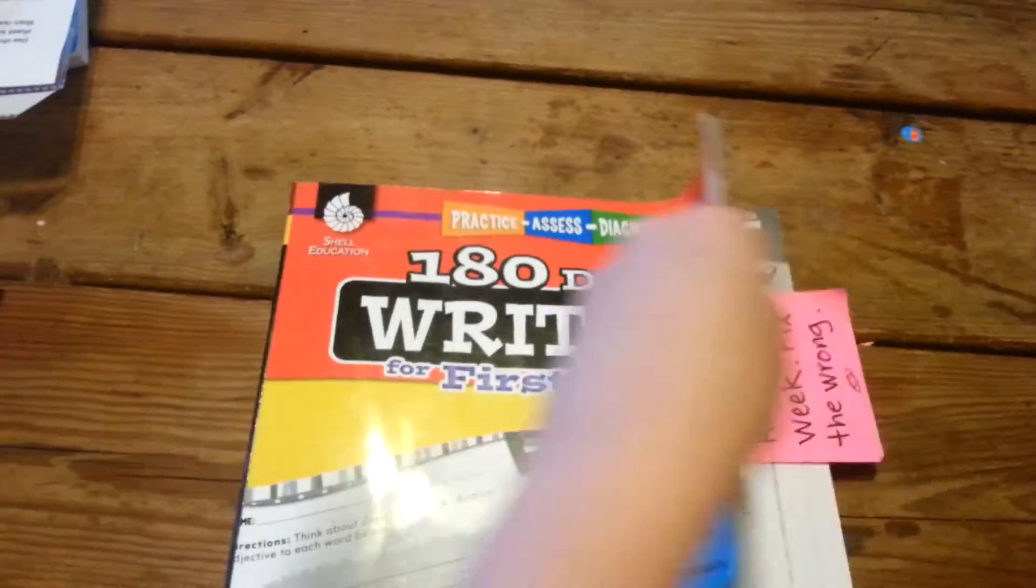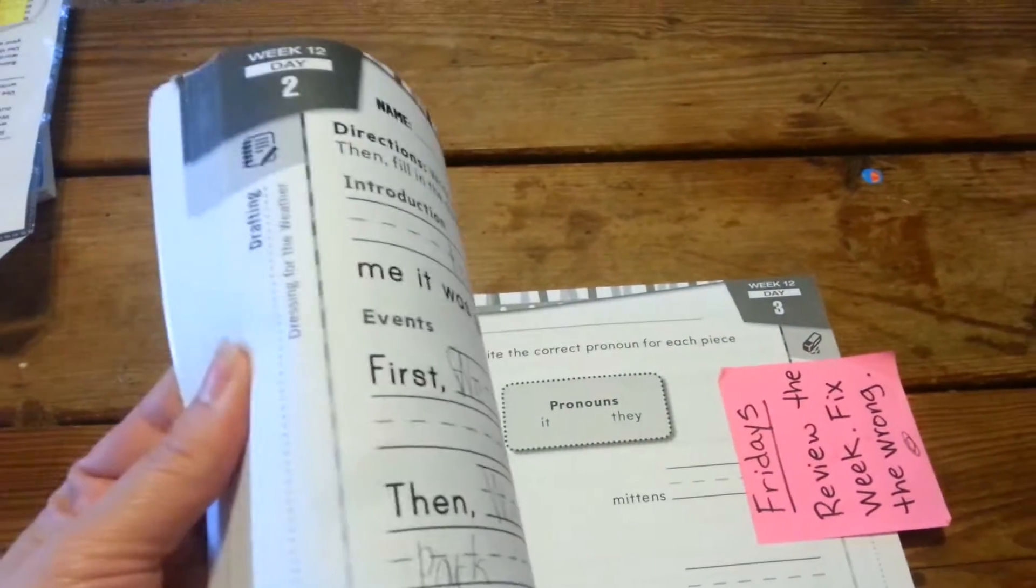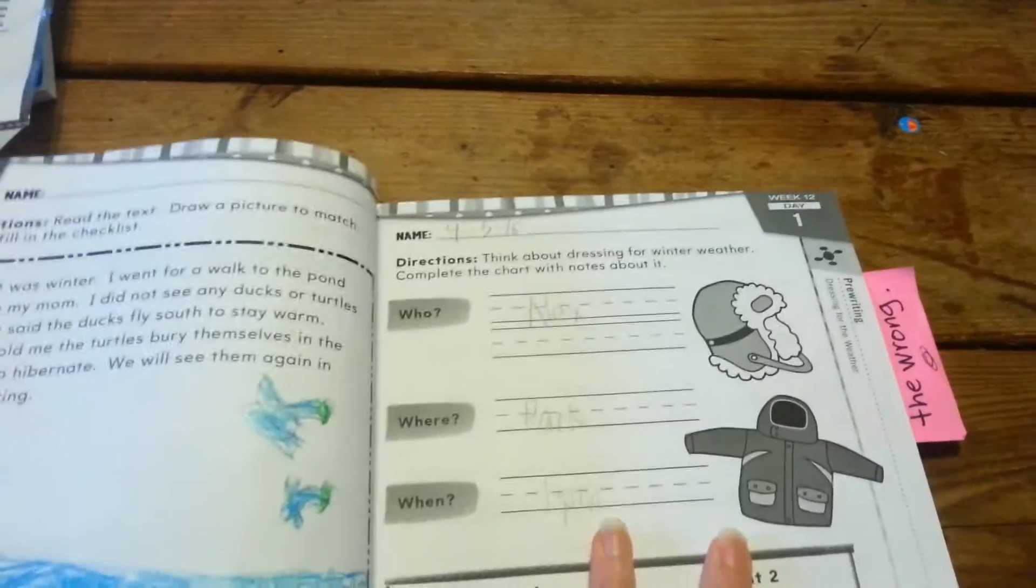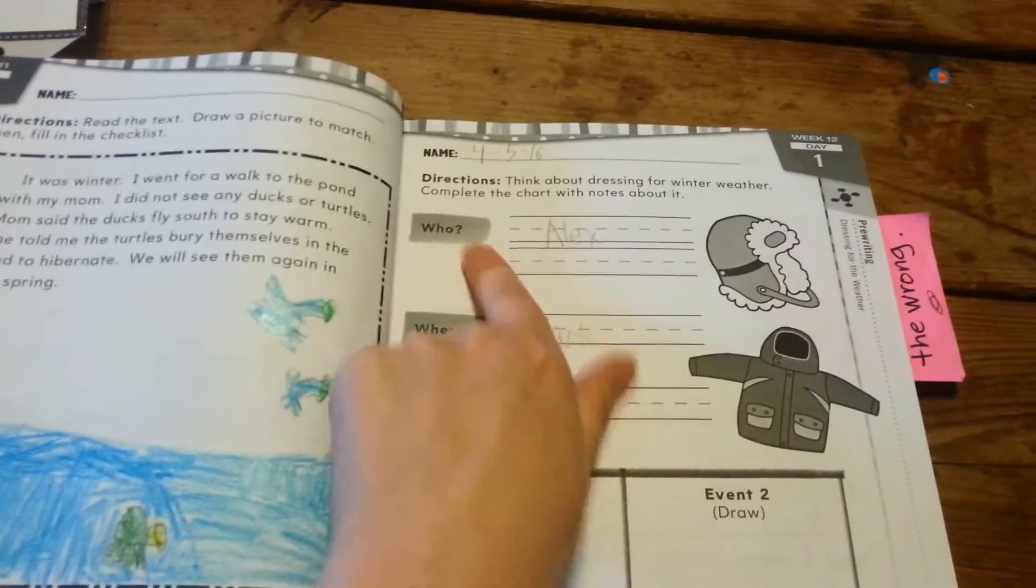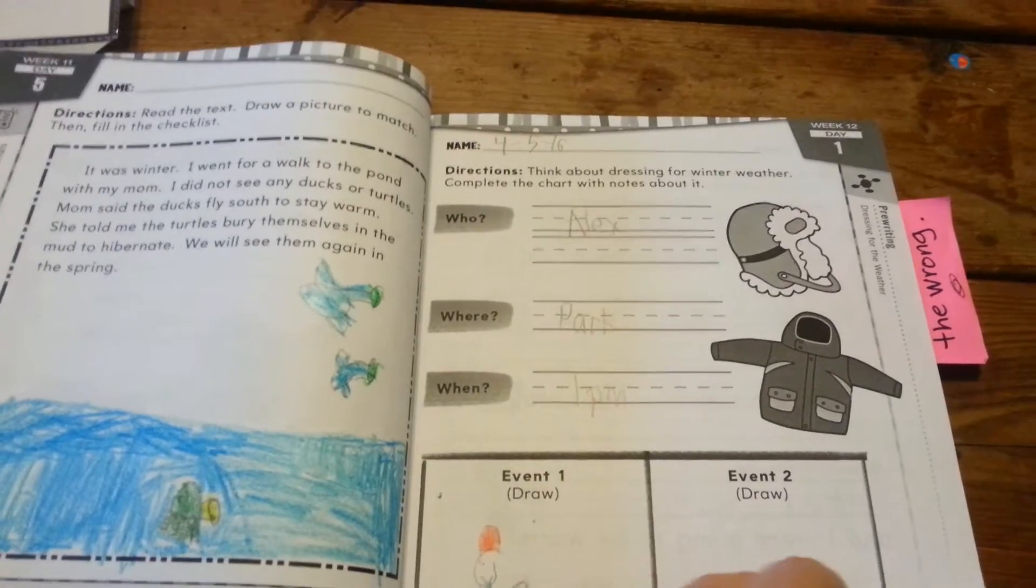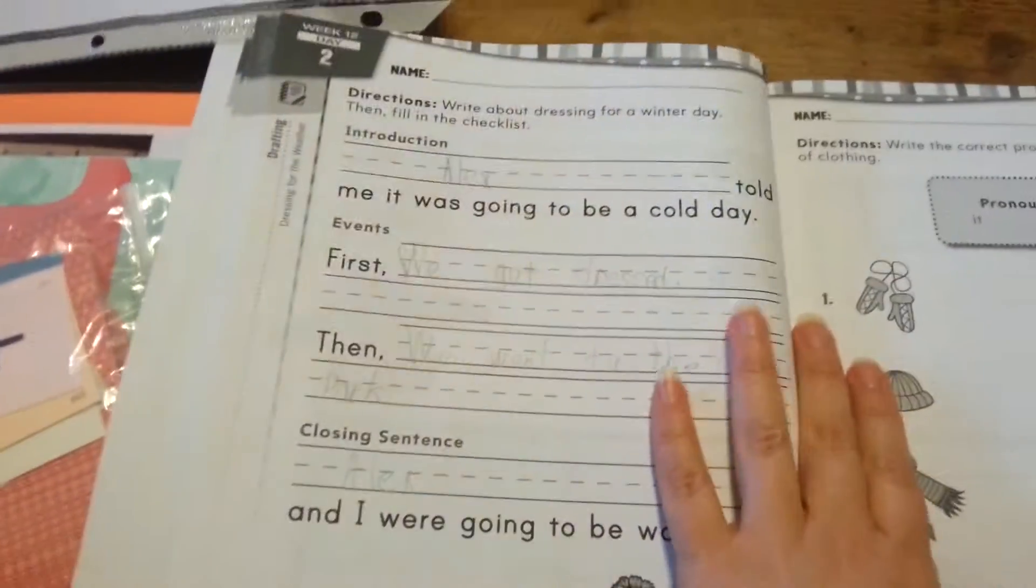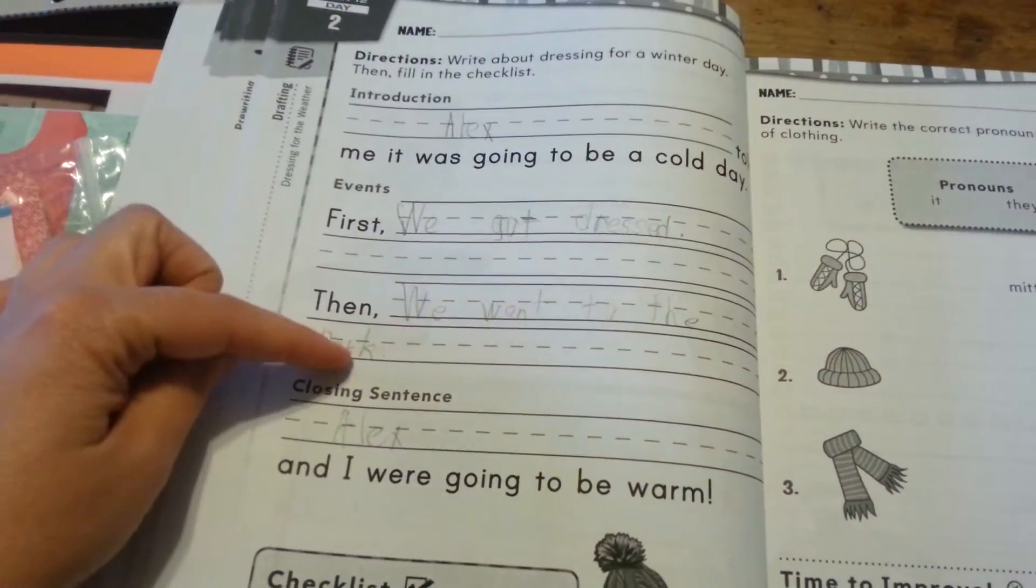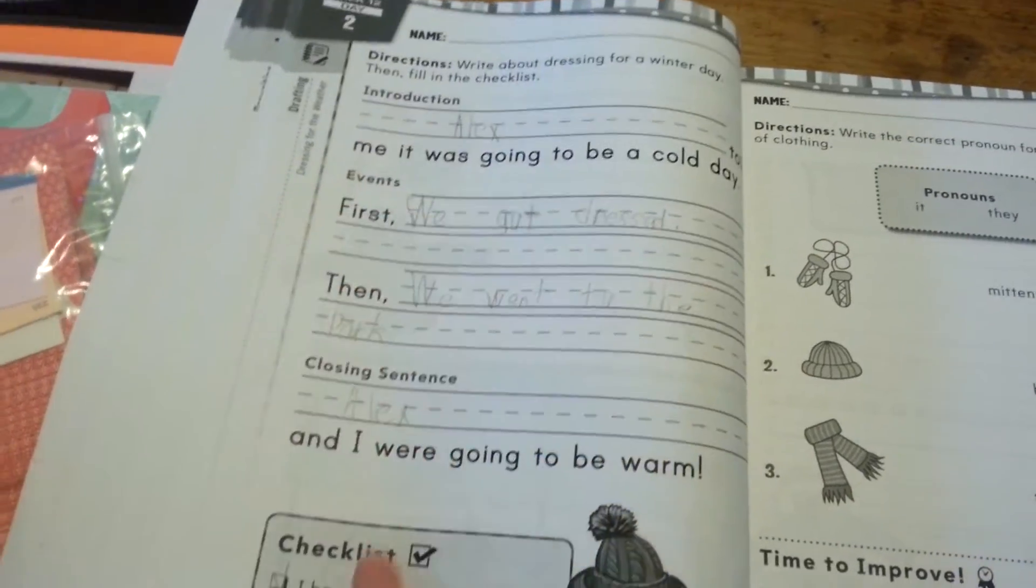And then he did his 180 days of writing. He started with this page where all he had to do was write who, where, when, and then think of two events. Then they talked about the winter weather. And then over here he had to use those events that he used yesterday and actually create kind of like a little paragraph.